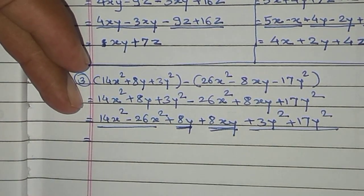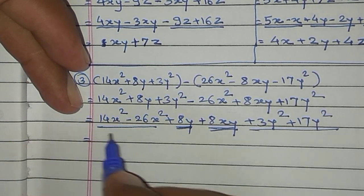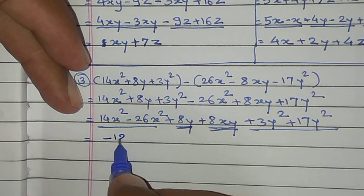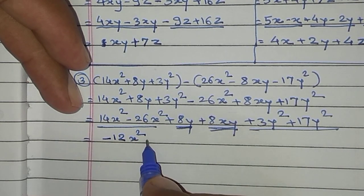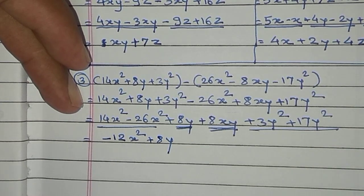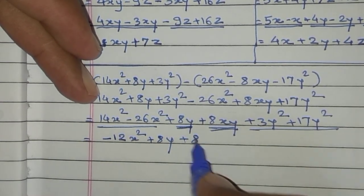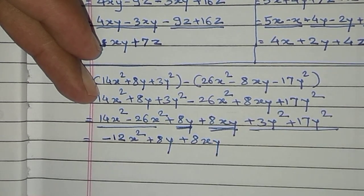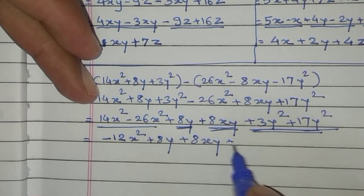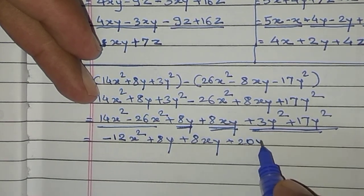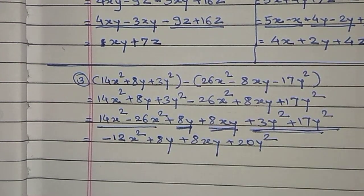Now write the answers of the like terms. 14 minus 26 gives minus 12x². For 8xy, there is no like term so it comes as it is: plus 8xy remains as it is. Plus 3 plus 17 gives plus 20, and their variable is y². This is our final answer: minus 12x² plus 8xy plus 20y².